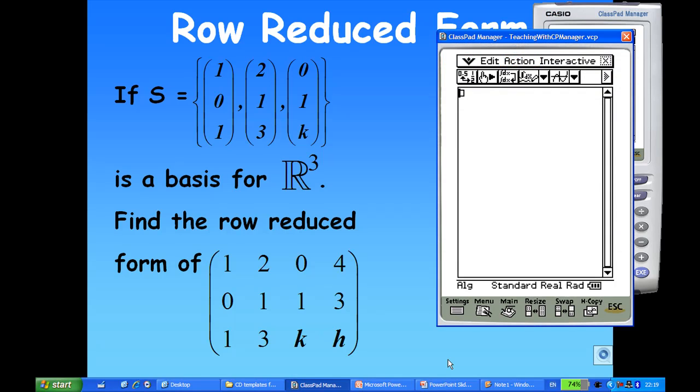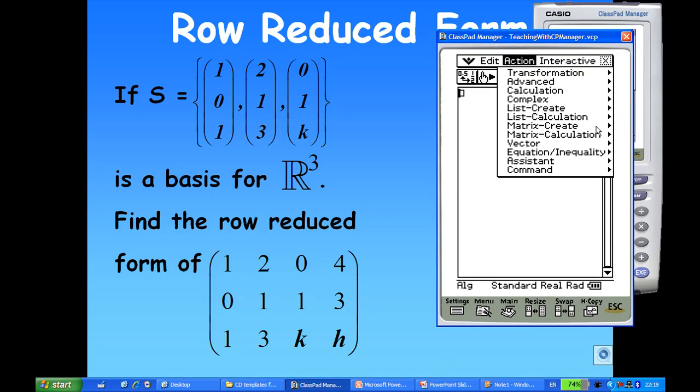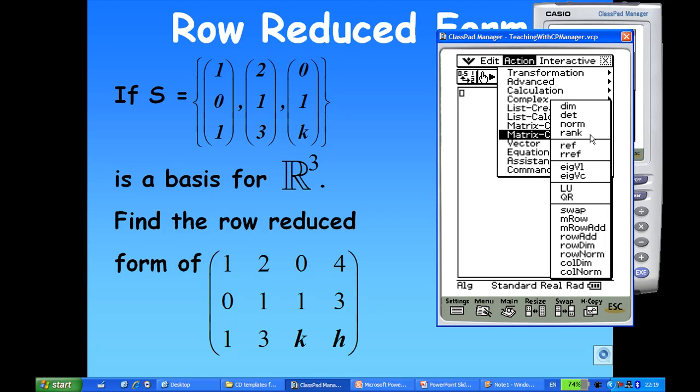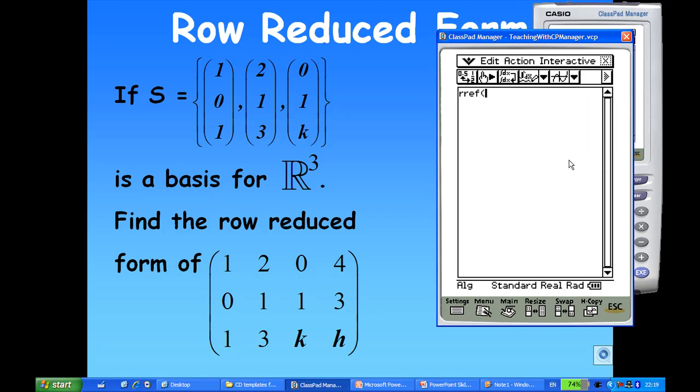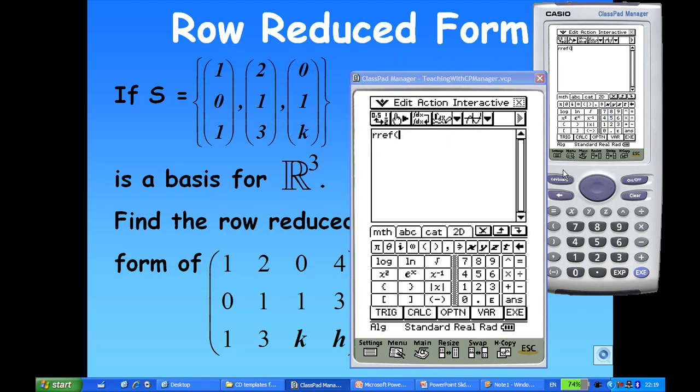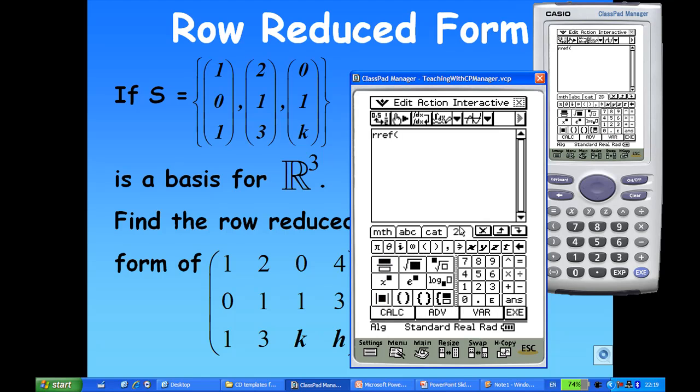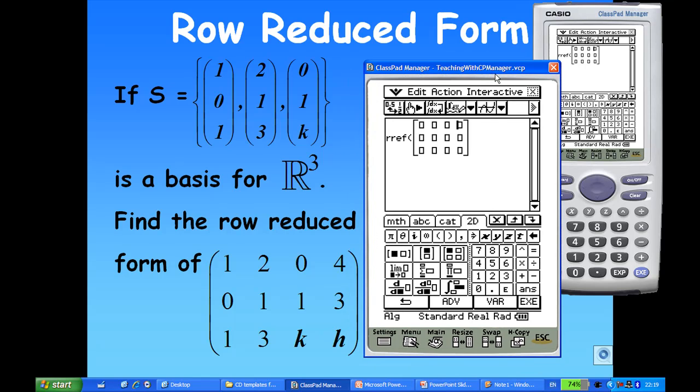So for my ClassPad, I can actually go to Action, Matrix Calculation, and then RREF. Then I use the keyboard to open up the matrix here, 2D Calculus. Then I need a 3 Row, 4 Column. So I have 2 Row, 2 Column, and then tap again for 3 Row, 3 Column, and then tap another column for 3 Row, 4 Column.